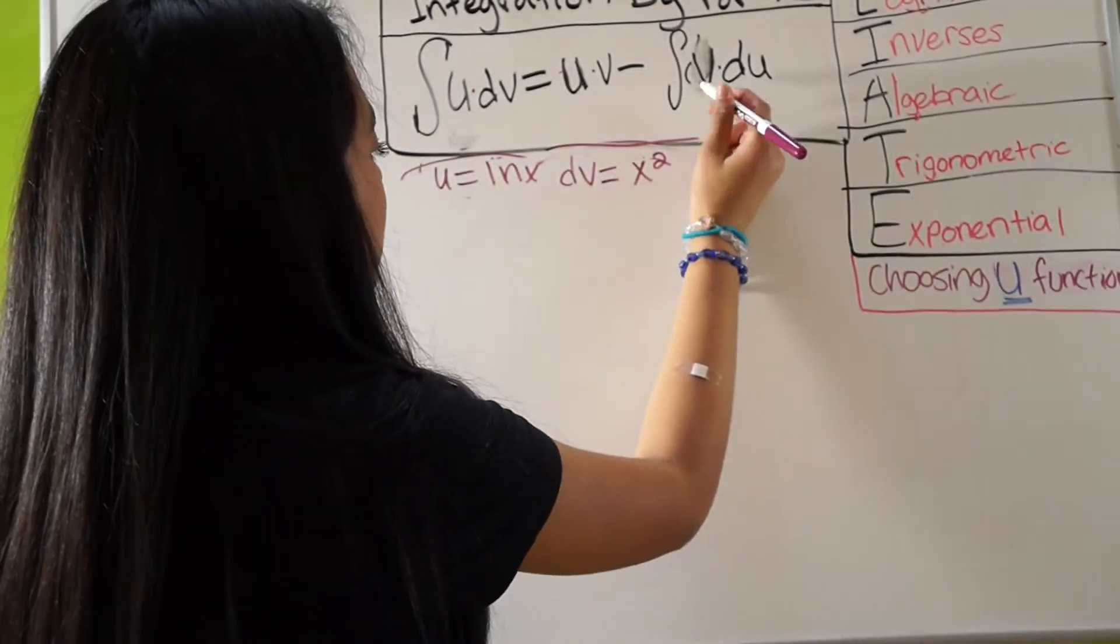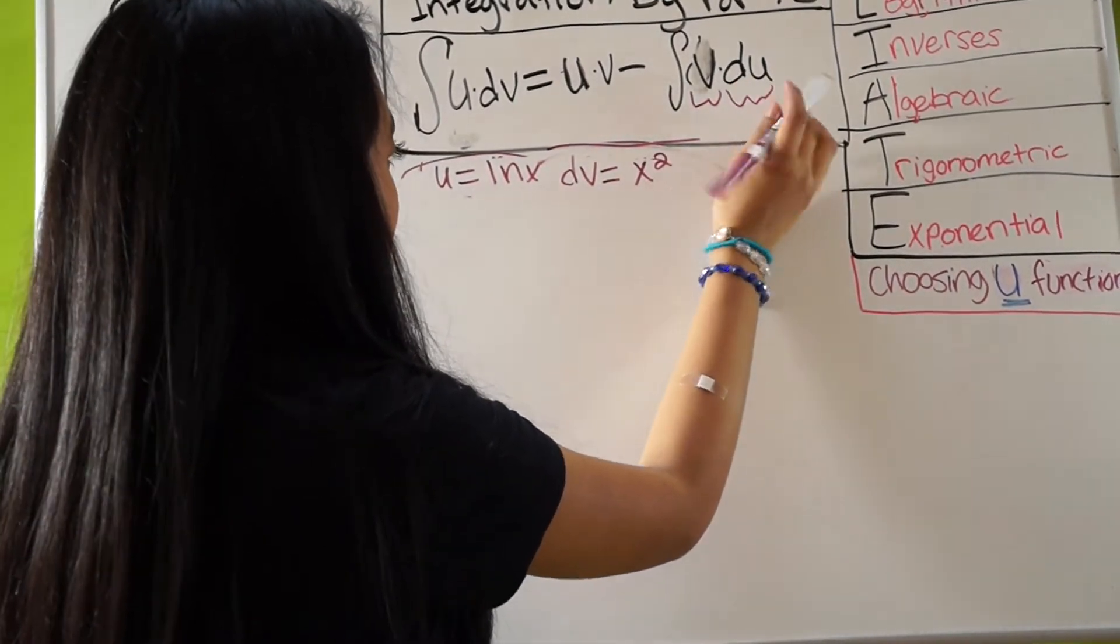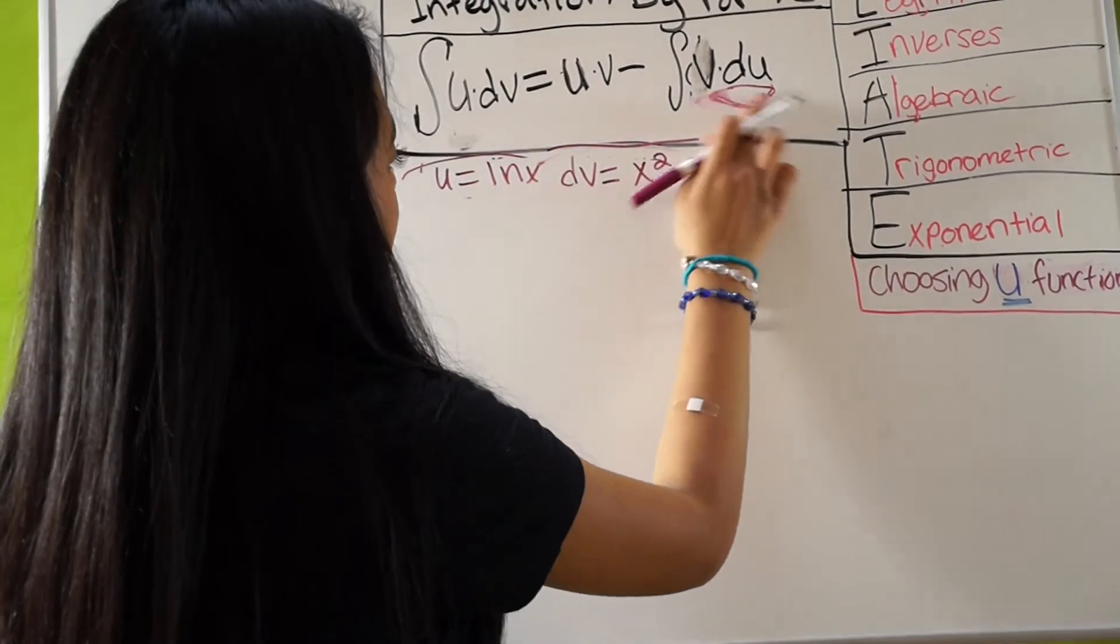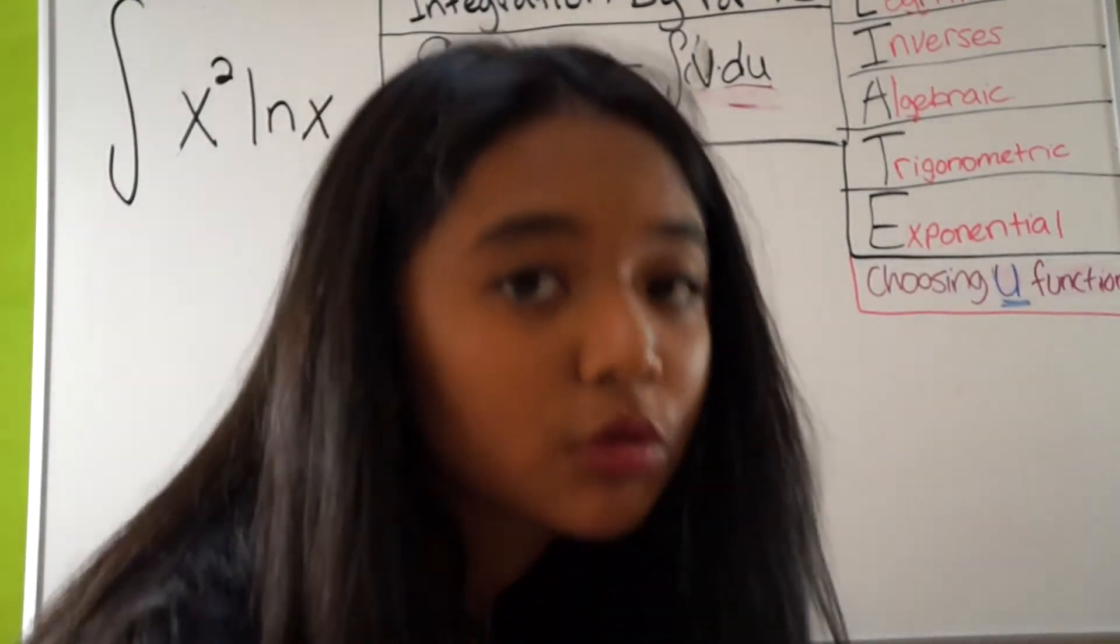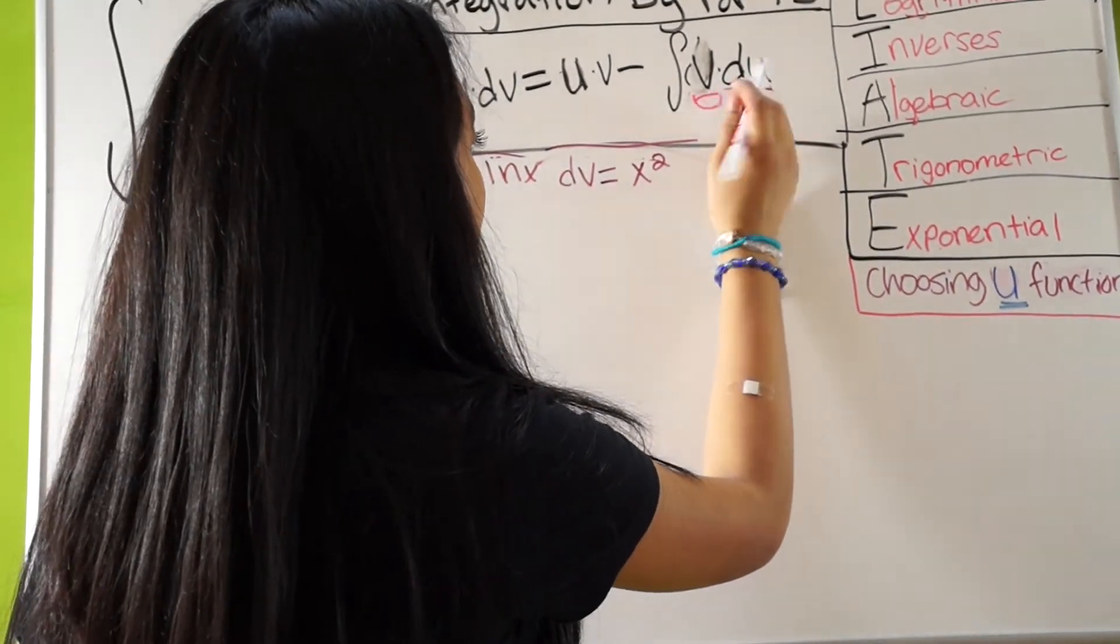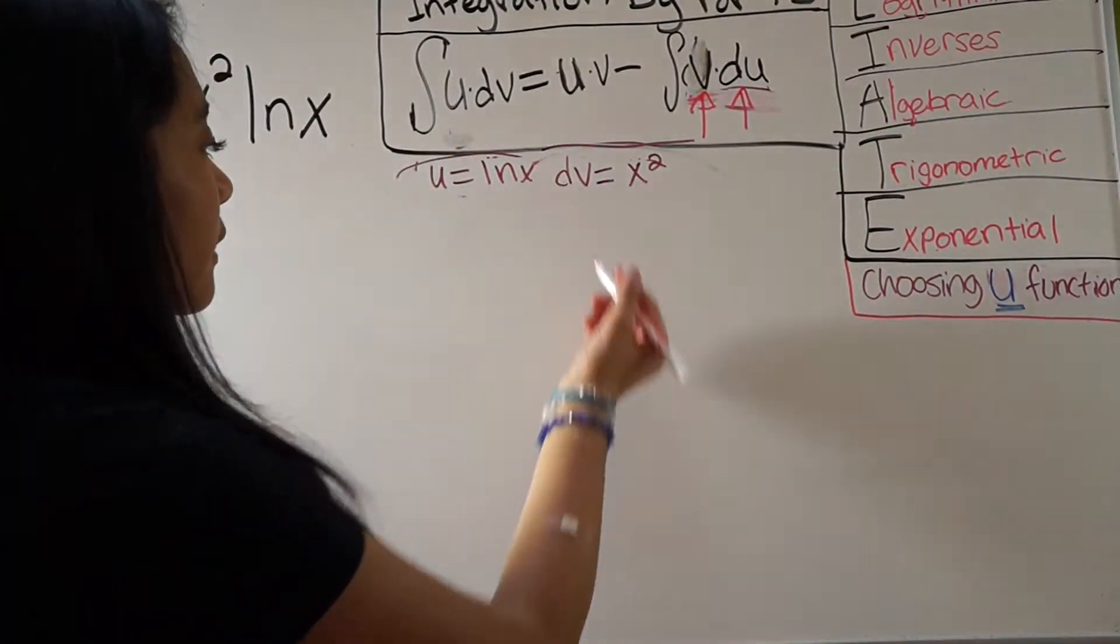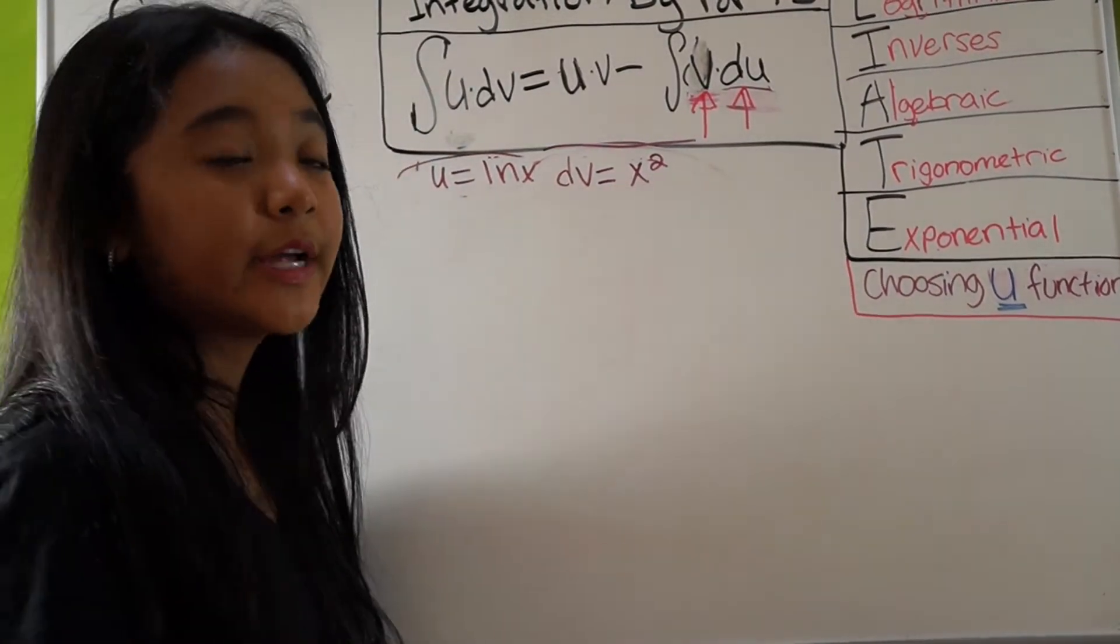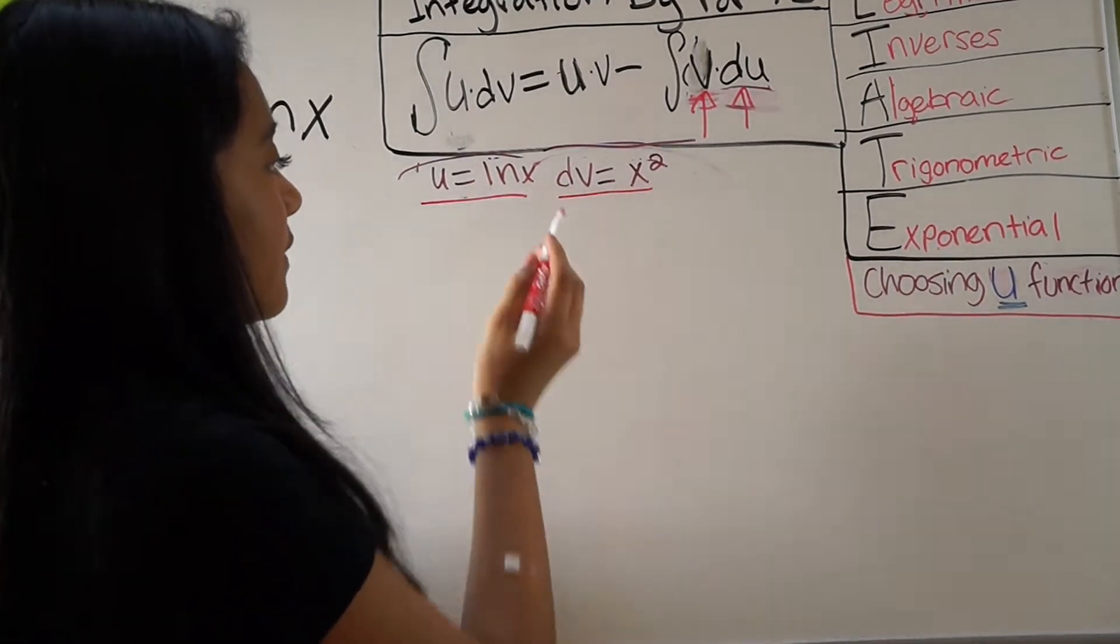And so, you need to look for your V. I'm sorry, I'm so sorry, I'm like bad at brackets and scribbles and stuff. So, you're going to need to find your V and your DU. So, here, what we're going to do is we're going to integrate this. We're going to integrate this, and we're going to take the derivative of this.